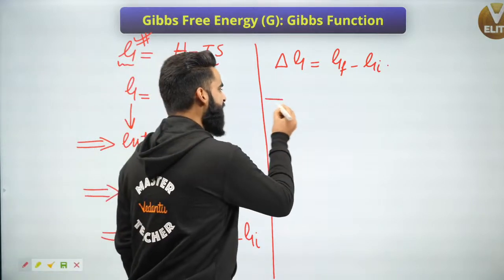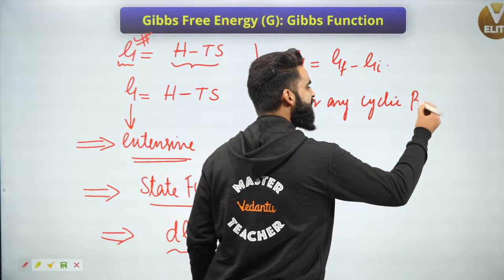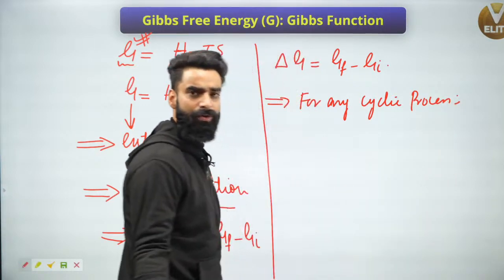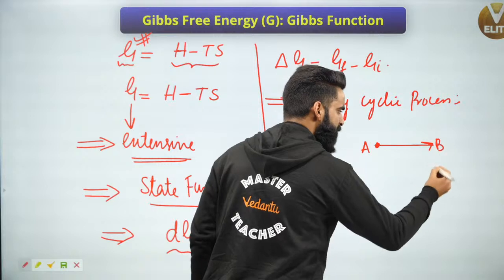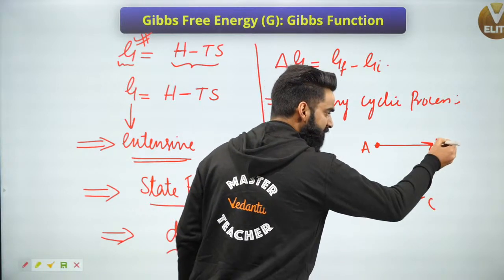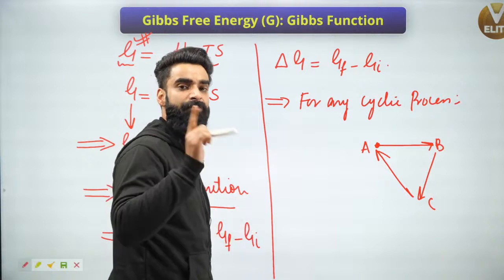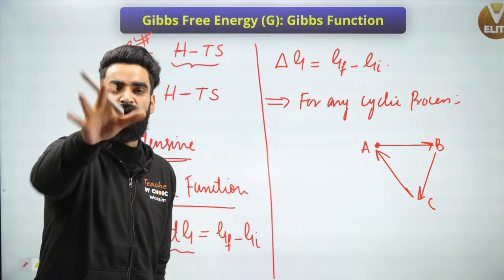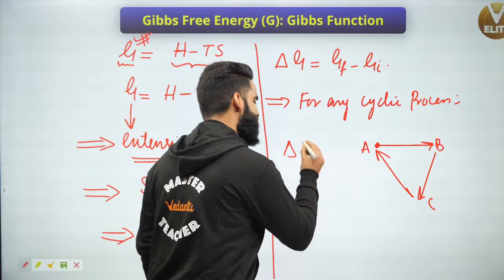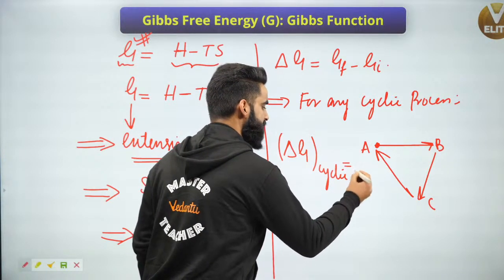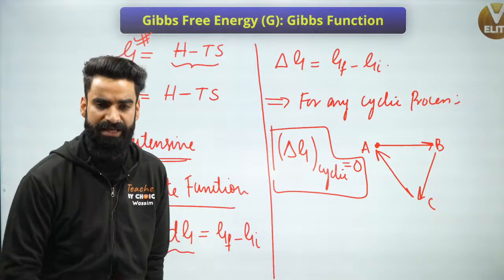One more thing: for any cyclic process, the change in the value of a state function is always taken to be zero. Since Gibbs free energy is a state function, ΔG for a cyclic process will always be zero. So anything can be asked in your NEAT — is it an extensive property, is it a state function, and what is the value of ΔG for a cyclic process?